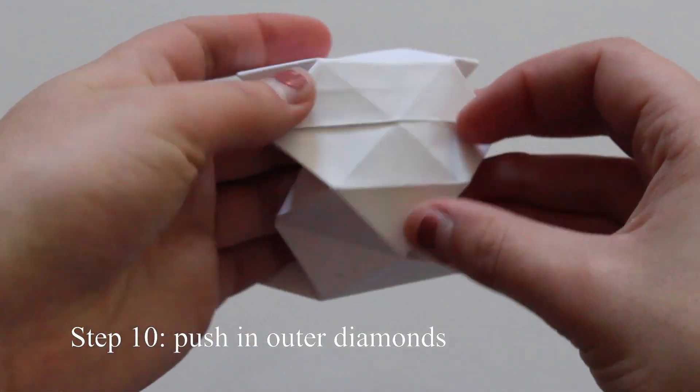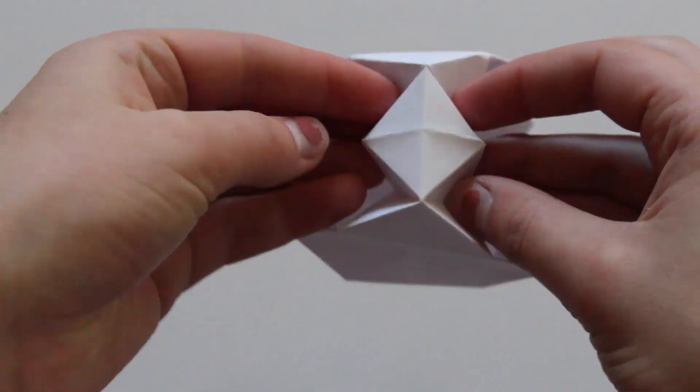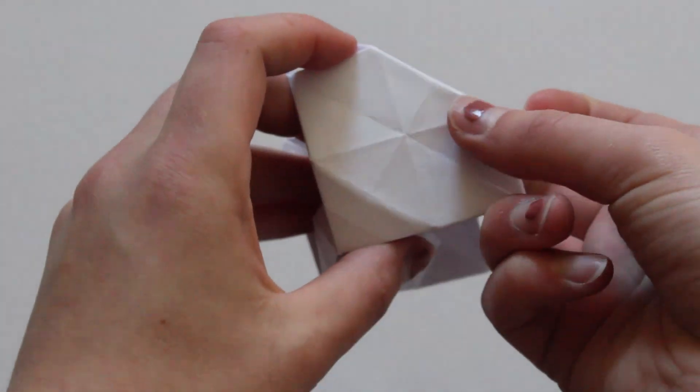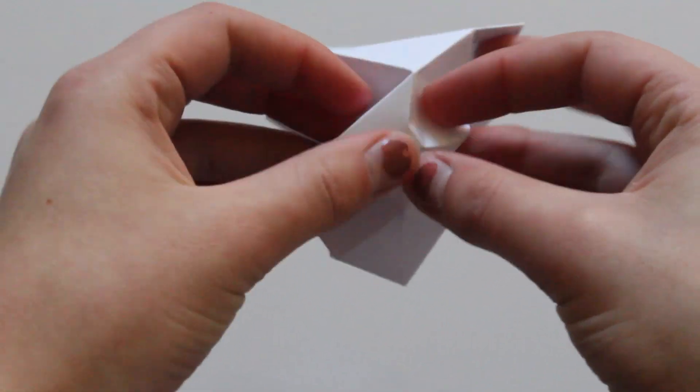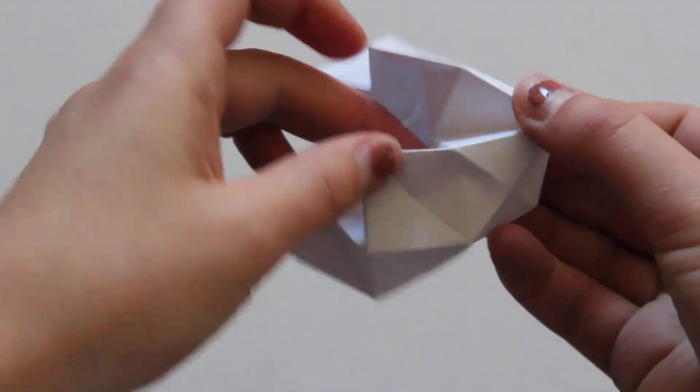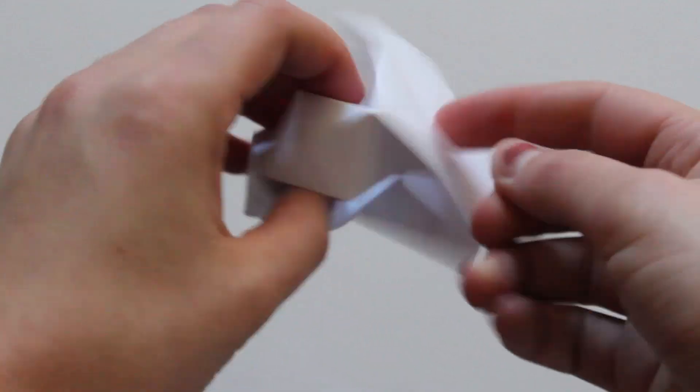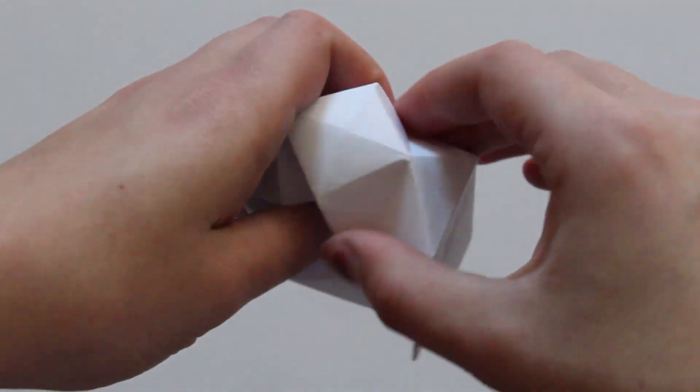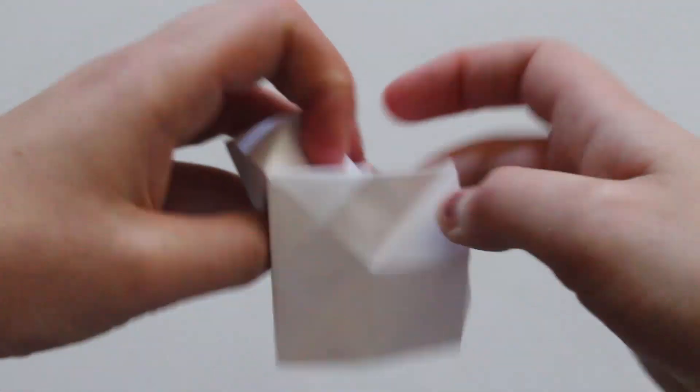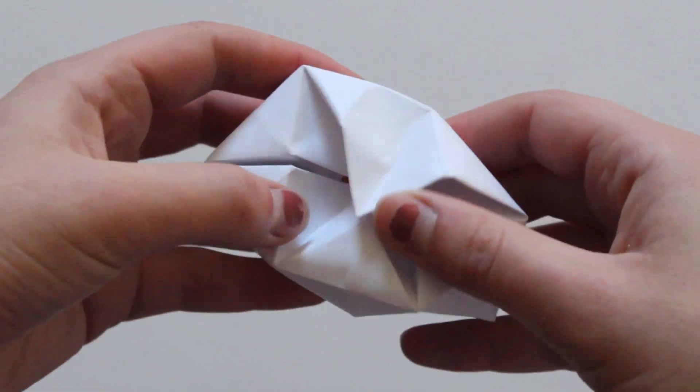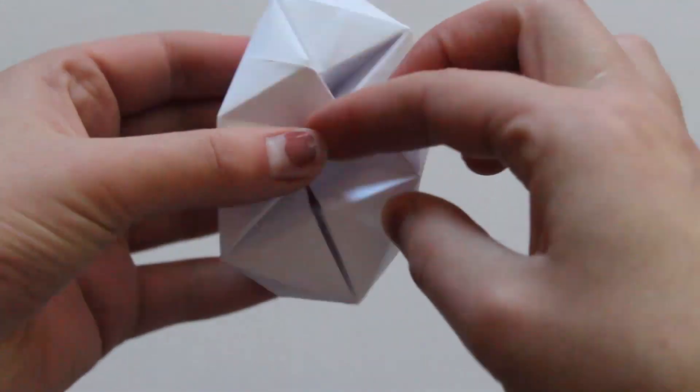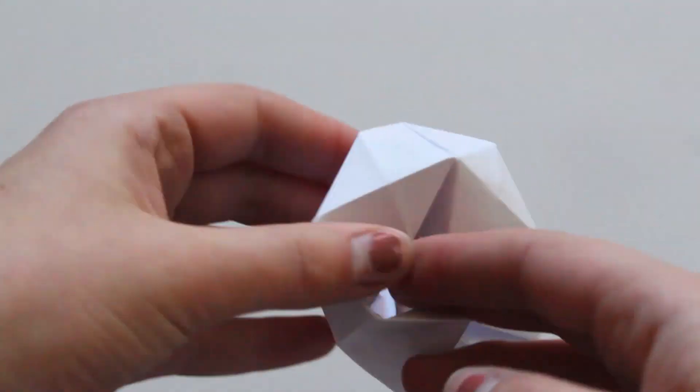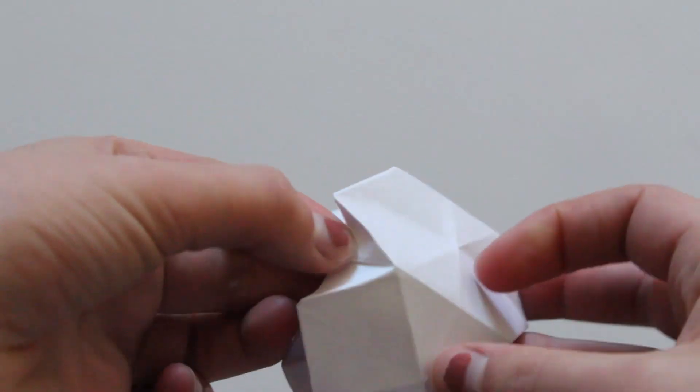Our next step is fairly similar, and we will just push in the outside diamonds. You can see the three rows of diamonds going around the shape, and we will just isolate the middle row by tucking in the top and the bottom. This is by far the trickiest step, so if it takes a little bit of fiddling, don't worry. You can see me here—I'm having to reach my finger in and pop out the creases so that it folds the right way. If you just keep on fiddling with it, then eventually it will fall into place.